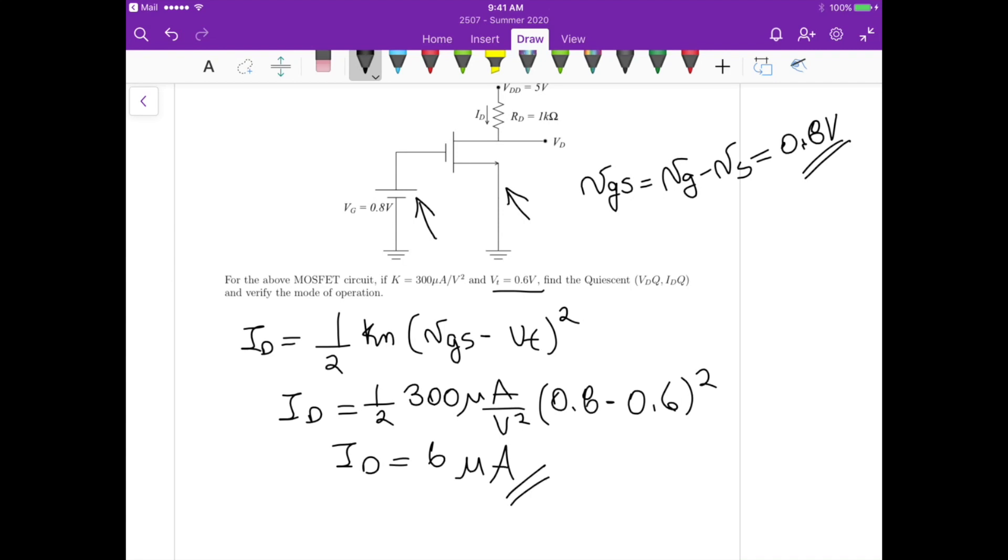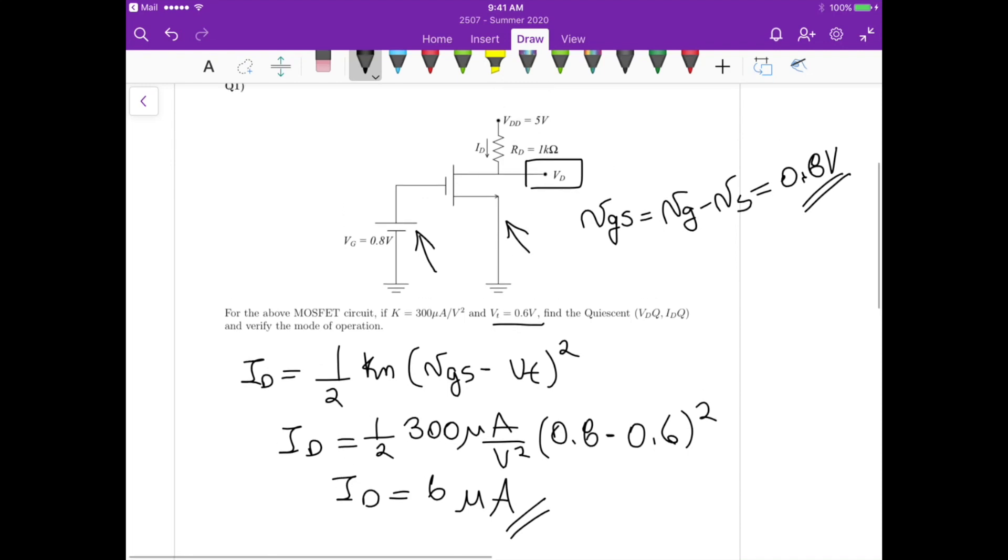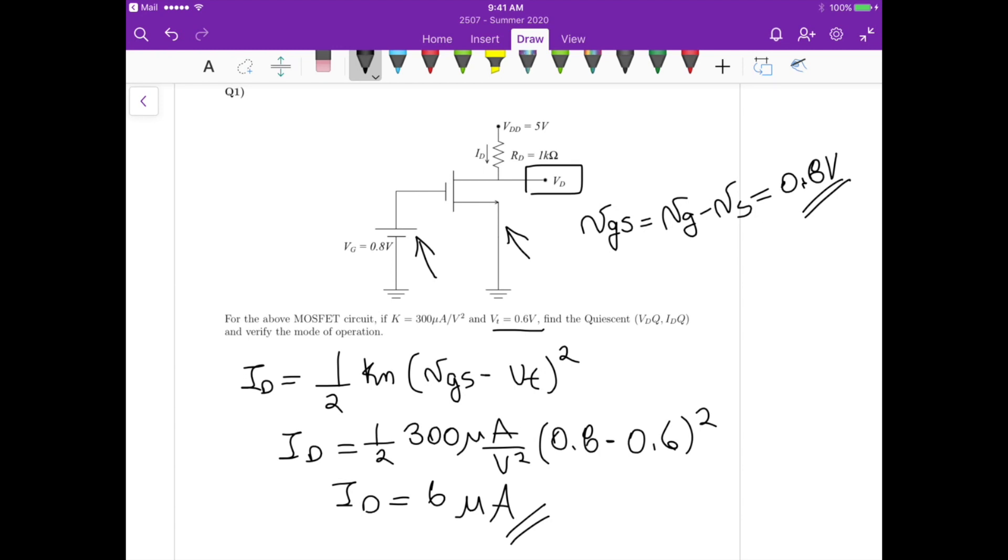So if you want to calculate the value of Vd, the voltage at the drain terminal, we just need to recognize that if we have Vdd up here, then we would have some voltage drop across this 1k ohm drain resistor, and then we are left with Vd.